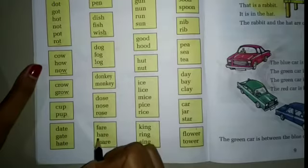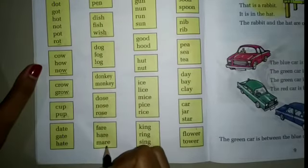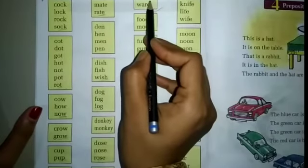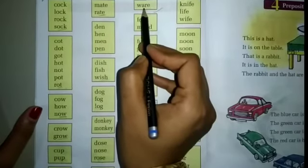F-A-R-E Fare, H-A-R-E Hare, M-A-R-E Mare, W-A-R-E Ware. ARE is the same ending of these words.